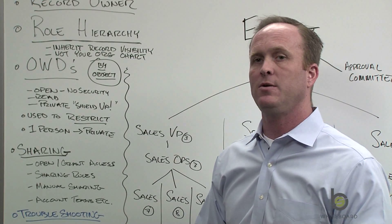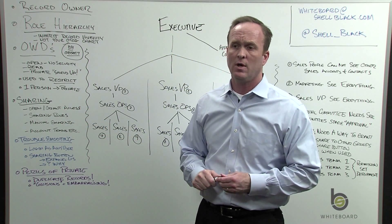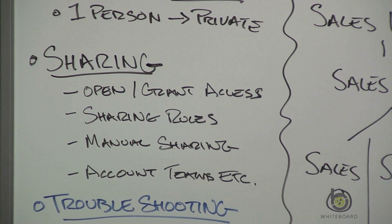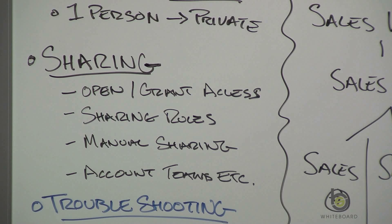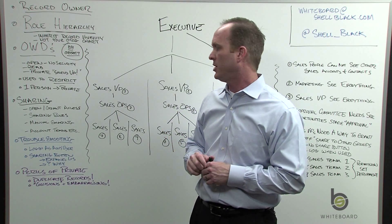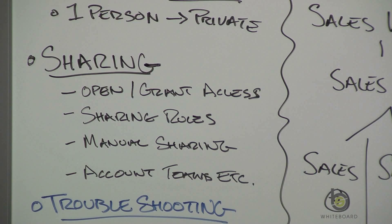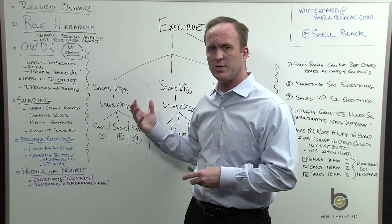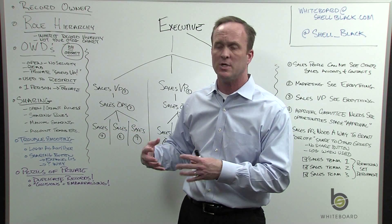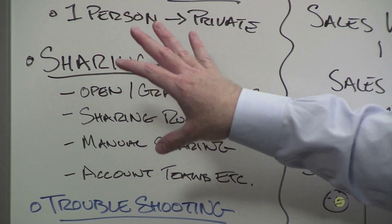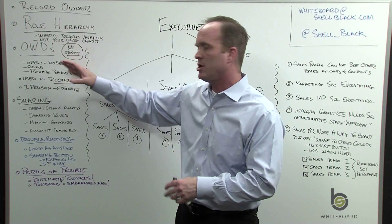Sharing can't restrict — it only grants access; it's the opposite of OWDs. It allows you to make records visible to groups of users or users matching certain criteria. You can do this through sharing rules, through manual sharing — there's a share button on the record that owners can use to grant access to individual users — or through account teams, where you can designate that someone like an inside sales person or contracts person needs access to certain records because they're part of the account team. Sharing is how you grant access back; OWDs is how you restrict.